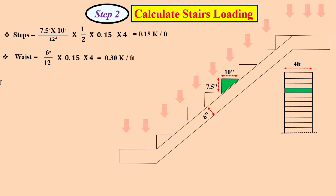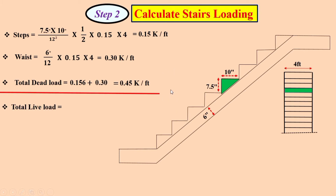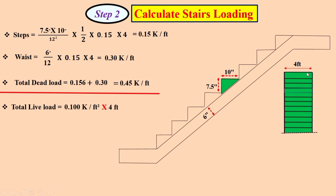The total load equals total load of steps plus total load of waist. So the total service dead load equals total load of steps plus total load of waist. Now dear students, we also need to design the stair for live load. The live load is 100 pounds per square foot; converting to kip per square foot by dividing by 1000 gives 0.100 kip per square foot. Multiplying this live load by the width of the stair gives the total live load for this stair.